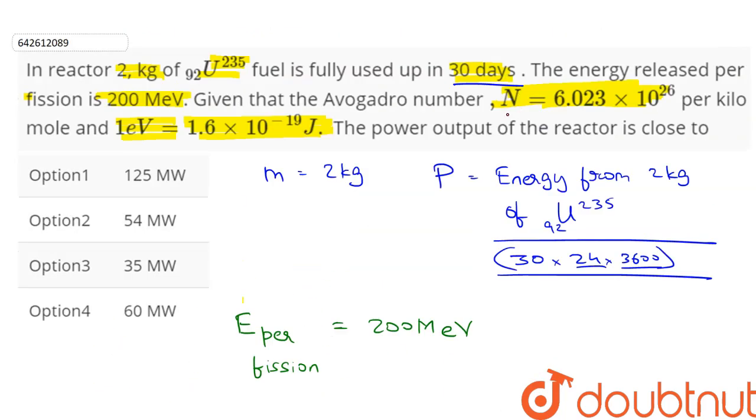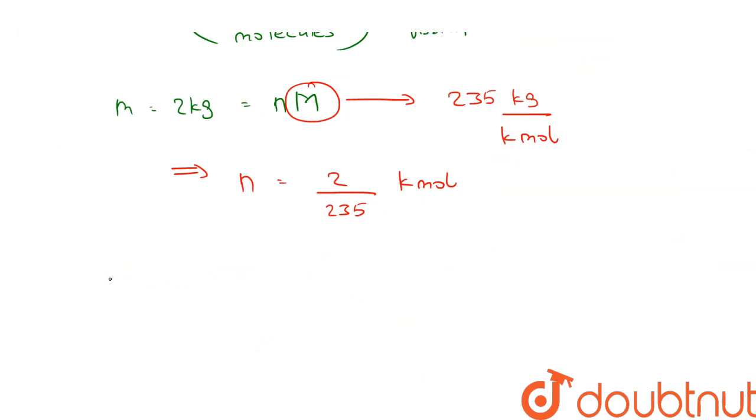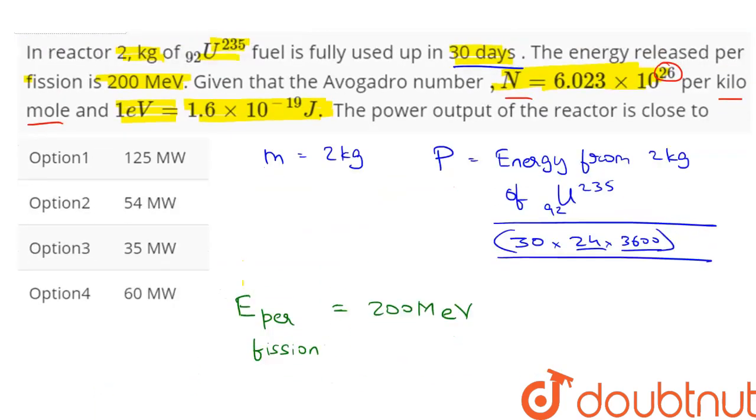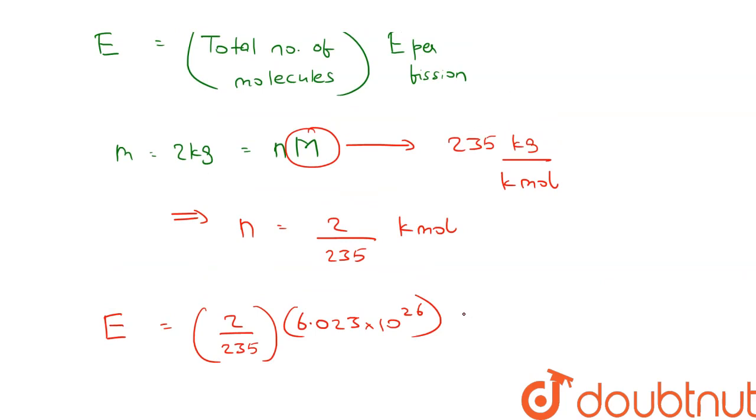Now we are given Avogadro number N is equal to 6.023 into 10 to the power 26 per kilo mole. If this was per mole, then it would be 10 to the power 23. So the total number of molecules will be equal to the number of moles, which is 2 upon 235, into the Avogadro number given here, which is 6.023 into 10 to the power 26.